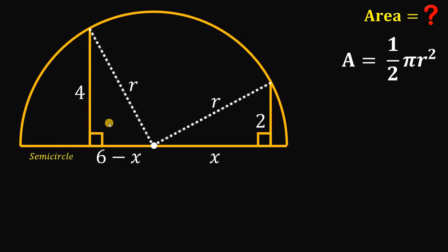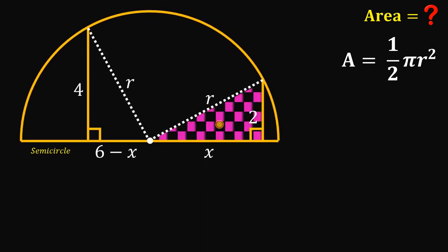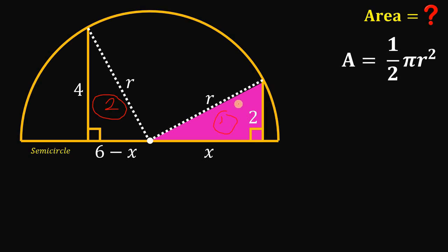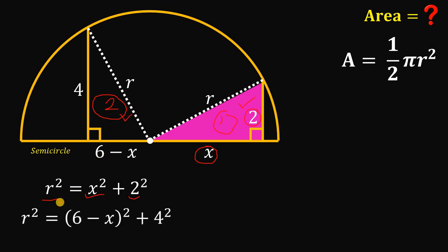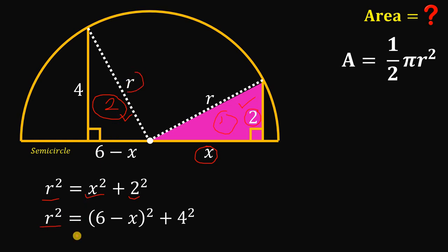We can now find the value of r. We're going to use these two right triangles right over here. Using the Pythagorean theorem on our first triangle, we have r squared — which is the radius of this circle, or the hypotenuse of this right triangle — equals x squared plus 2 squared. If we use the Pythagorean theorem on our second right triangle, we have r squared equals (6 minus x) squared plus 4 squared.